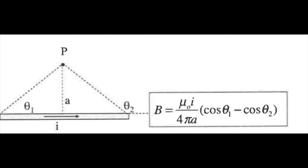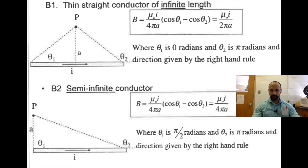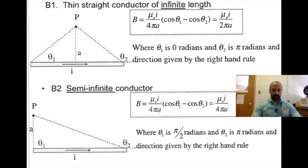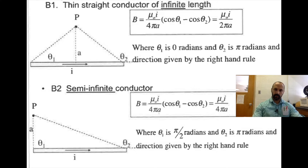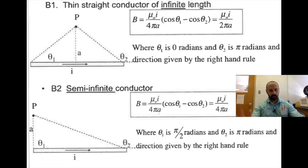If this conductor is infinitely long, you end up with a factor of 2, because θ₁ = 0 and θ₂ = π (180°). So you get 1 − (−1) = 2. The magnetic field for a wire of infinite length is μ₀i / (2πa).